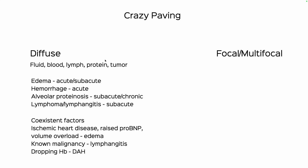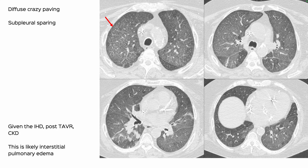The presentation — acute, subacute, or subacute-chronic — along with coexistent factors like ischemic heart disease, volume overload, malignancy, or dropping hemoglobin, helps differentiate among these entities. Given this patient's history of ischemic heart disease, post-TAVR status, CKD, no medication that would produce alveolar proteinosis, no other abnormal entity, and no storage disorder, this would basically imply interstitial edema.